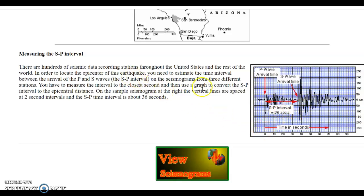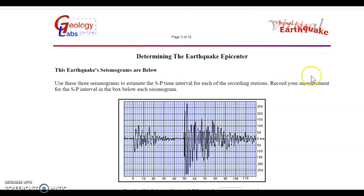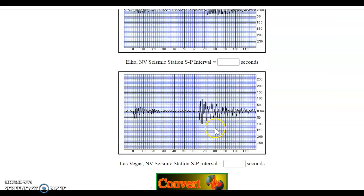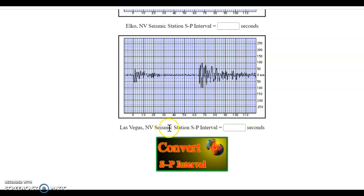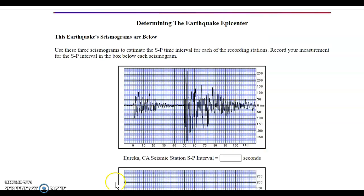We're going to be measuring S-P intervals, and we're going to view the seismograms of the three seismograph locations we'll be using. Here they are: Eureka, California, Elko, Nevada, Las Vegas, Nevada. If you want to see where those are exactly, you can go back and look at the map, or wait just a little bit, and we will see maps again. The zero is always recording when the first P wave came in. That'll be our zero mark.